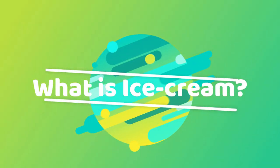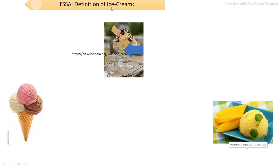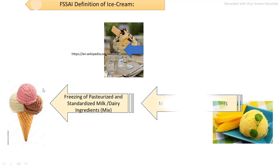What is meant by ice cream? Ice cream is the product in which the milk containing water is converted into ice along with the milk cream. As per the Food Safety Standards of India, ice cream is defined as the product made from freezing of pasteurized and standardized milk and milk-related ingredients along with an additional number of other ingredients.